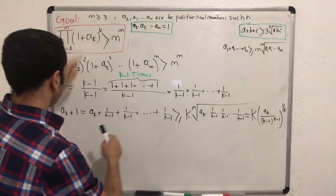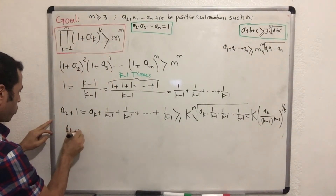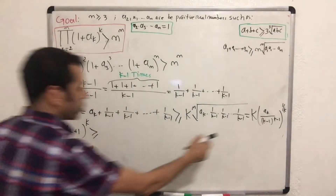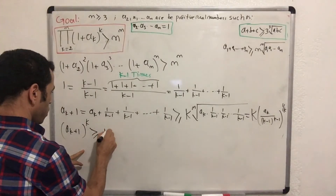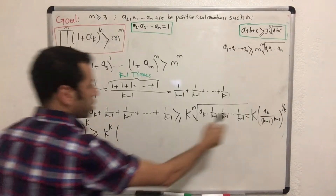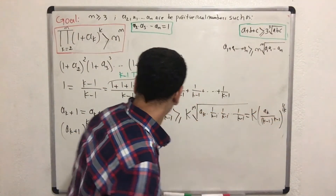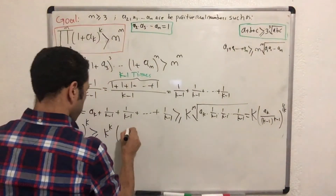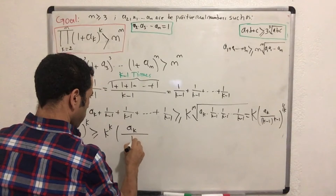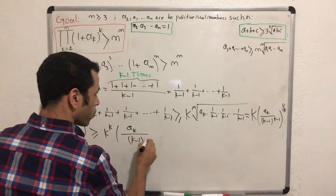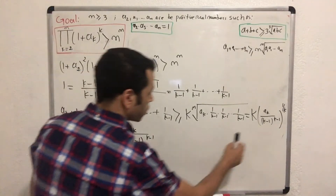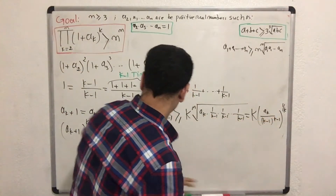Now I'm going to raise both sides to the power k. So (a_k + 1)^k is greater than or equal to k^k. Then the 1/k cancels, and our expression becomes (a_k/(k−1))^(k−1).